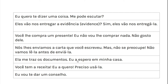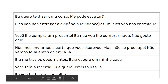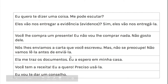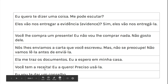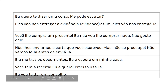Eu a espero em minha casa. A is ela — I'm esperando ela. Você tem a receita? A receita is a recipe. Eu a quero — a quero a receita. Eu a quero. Preciso usá-la — you need to use the receita, which is feminine singular. É a última frase que foi bem fácil: eu vou te dar um conselho — I'm going to give you some advice, or a piece of advice. Tá bom?